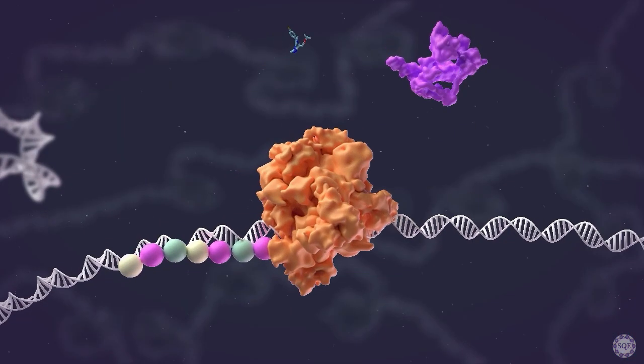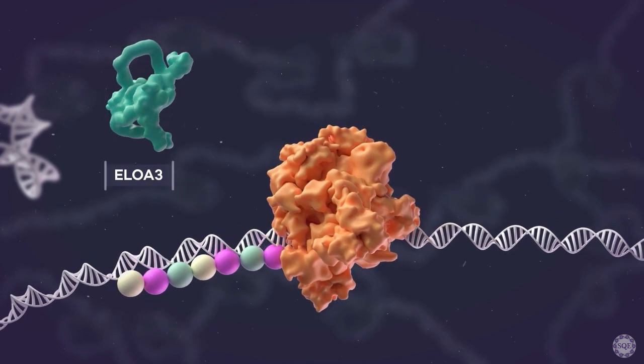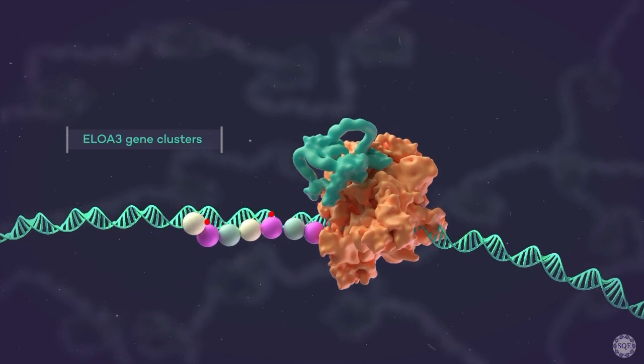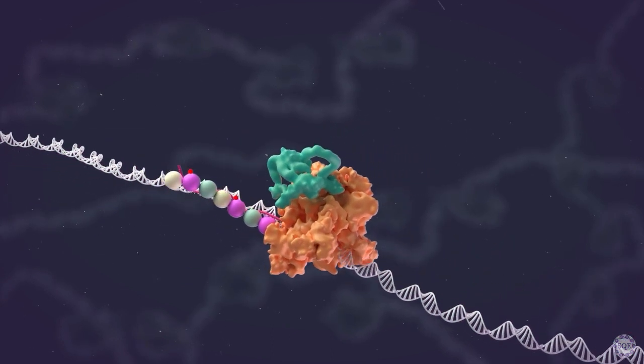Cells treated with JQ1 activate an enigmatic cluster of ELOA3 genes, a homologue of the RNA polymerase II elongation factor Elongin A, ELOA.